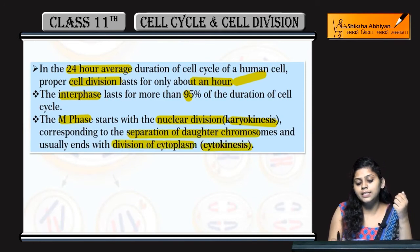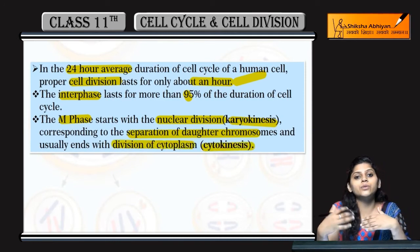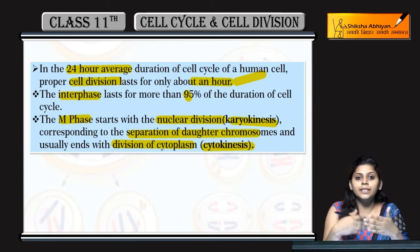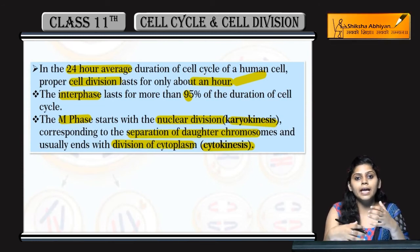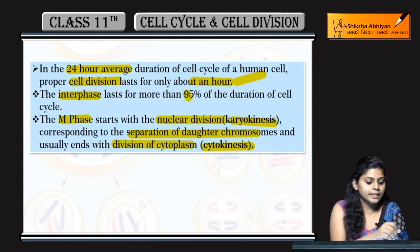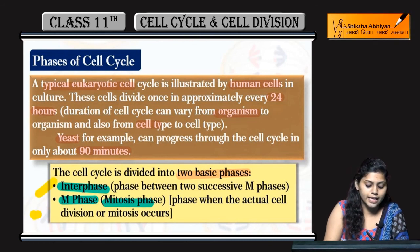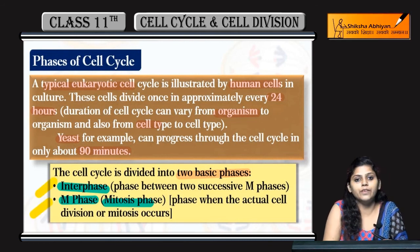At last, division of the cytoplasm occurs, meaning cytokinesis takes place. Next, we will study interphase and M phase in detail. So far, we have understood what happens in the phases of cell cycle: interphase and M phase.